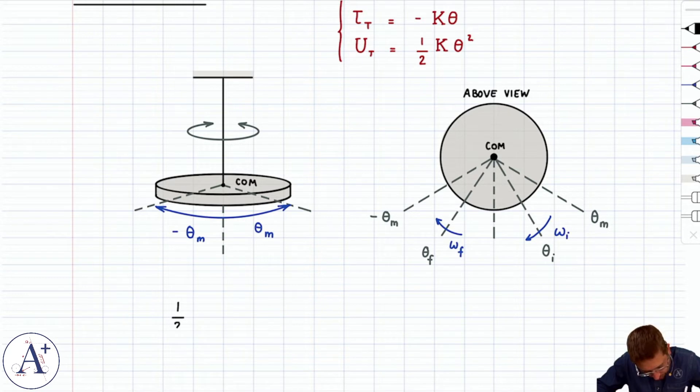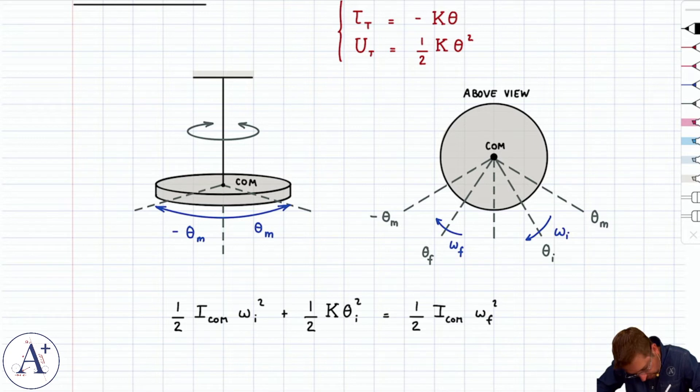If we write conservation of mechanical energy between those points, we would write one-half I center of mass omega initial squared, plus one-half kappa theta squared initial, equals one-half I center of mass omega final squared plus one-half kappa theta final squared.